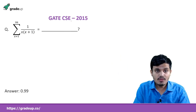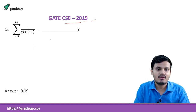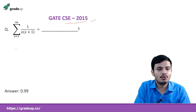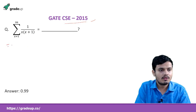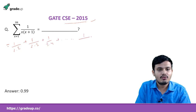This question came in GATE CSE 2015 and is a very good question — try it yourself. We need to find the sum: 1/(1×2) + 1/(2×3) + 1/(3×4) + ... + 1/(99×100).